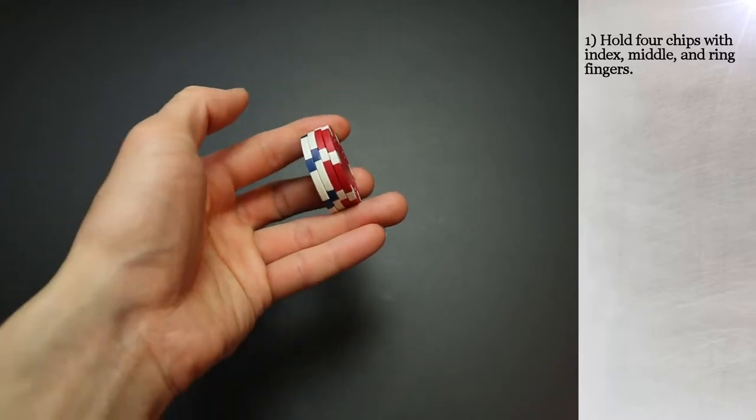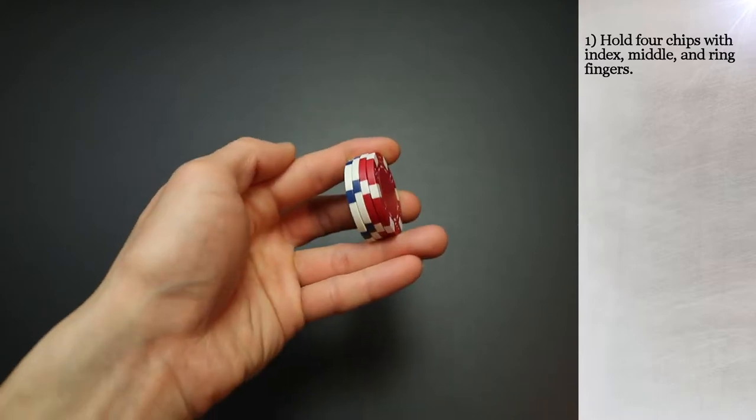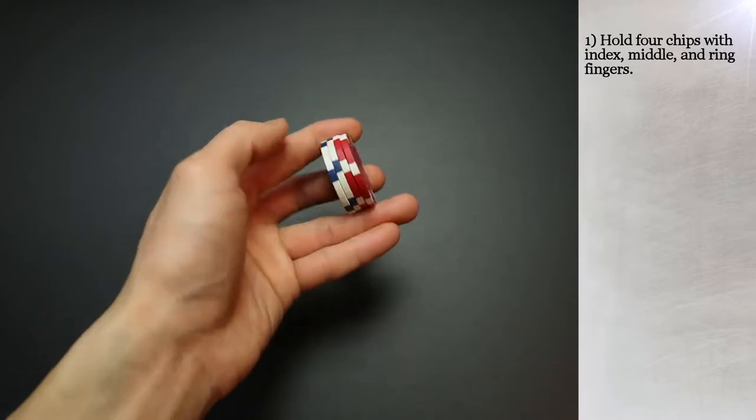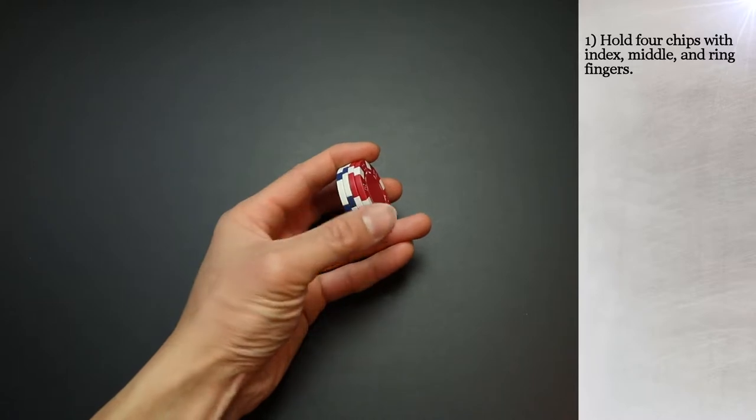The index and ring fingers pressure allows the chips to stay in place, and the middle finger helps straightening and providing extra balance support.